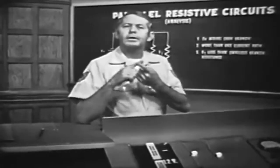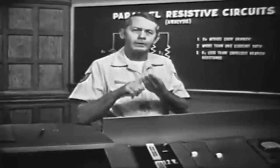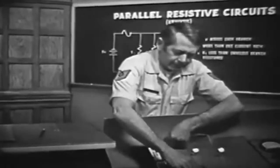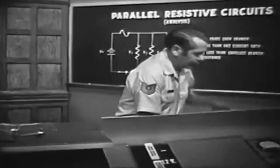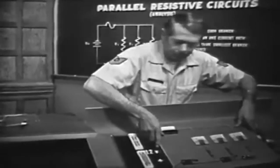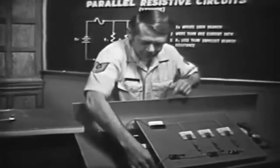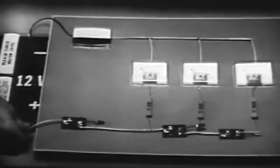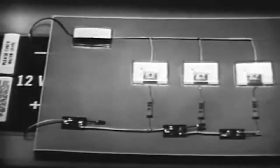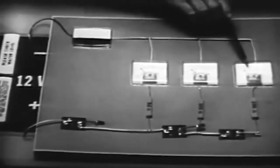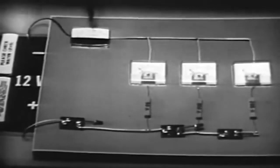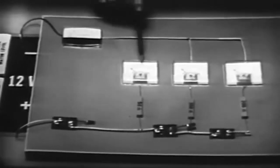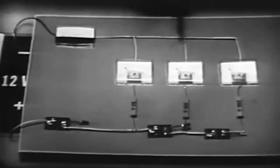A parallel circuit has more than one path for current, and the applied voltage is felt across each branch. Next, let's investigate the current distribution in a parallel circuit using another trainer. Notice that we have four milliamp meters in the circuit. The current leaving the negative terminal of the battery — all of the current must pass through this meter, which we'll use to measure total circuit current. The other meters will measure the current in the individual branches when I close the switches.